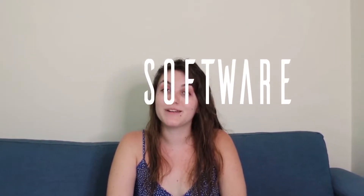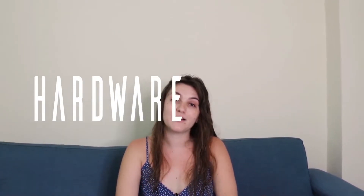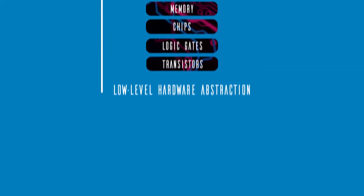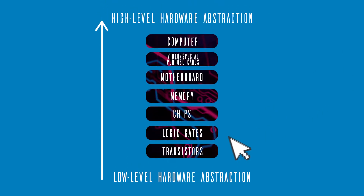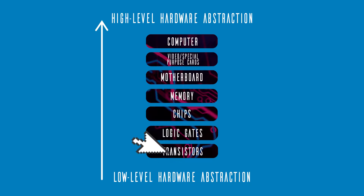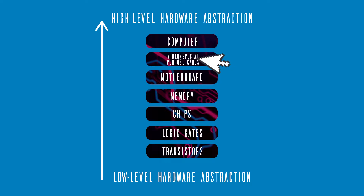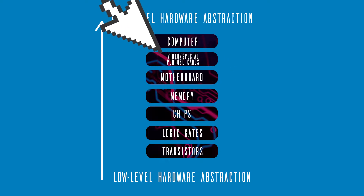Until now we've been talking about abstraction in software, but it's important to understand that we can also have hardware abstraction levels. The low-level is the transistor, like we already discussed. Then we have the logic gate, which is basically a physical electronic device implementing a boolean function. Right after, there are chips, memory, motherboard, video and special-purpose cards, and finally the high-level hardware abstraction — the computer itself.